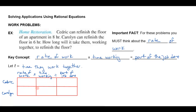The rate of work is just the reciprocal of the total time to do the job. If Cedric does the whole job in eight hours, his rate of work is one-eighth of the job per hour. Likewise, if it takes Carolyn six hours, her rate is one-sixth of the job per hour. If they work together for one hour, Cedric does one-eighth of the job and Carolyn does one-sixth — add those together and that's a little more than a quarter of the job done.